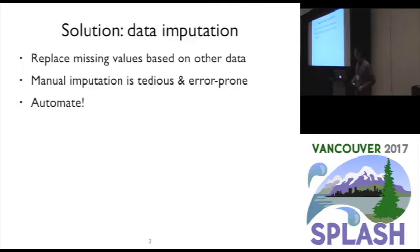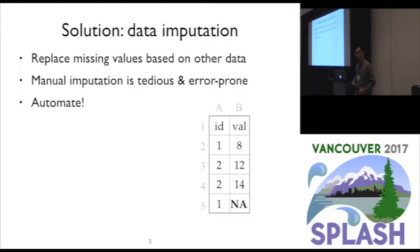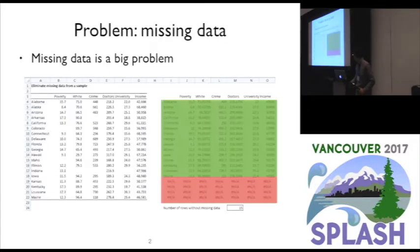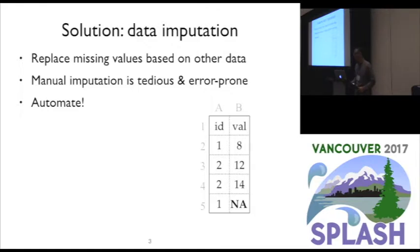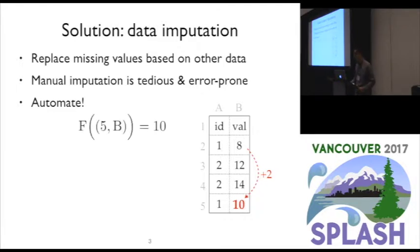One way for automating this is to write a program F such that applying F on each missing entry yields a desired value for it. For instance, imagine we have a data set with two columns. We would like to perform data imputation by replacing each missing value by the sum of the previous value with the same ID and the number two. In this case, we would like to replace the missing value by the value of 10. To automate this, we want to write a program F such that applying F on the missing entry — in this case, 5B — yields a desired value, in this case 10.